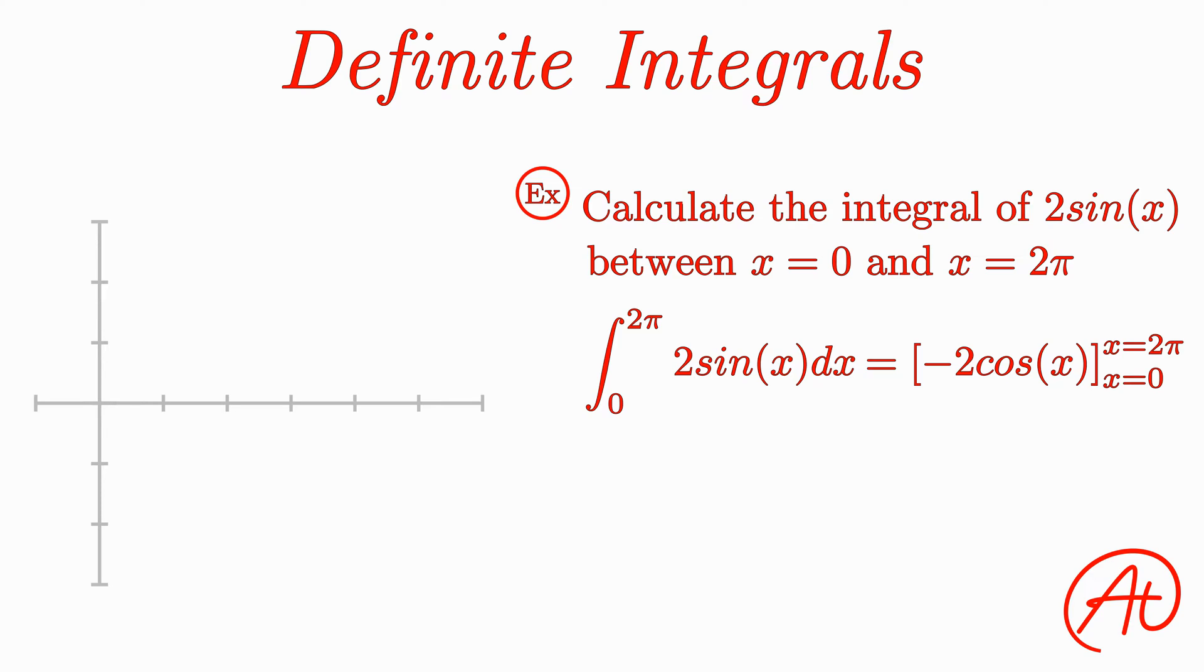Alright, returning to the problem, all that we have left is to plug in our bounds and solve. Plugging in our upper bound of 2π, we get -2cos(2π). Next, subtracting what we get when we plug in our lower bound,